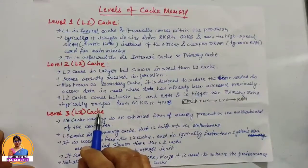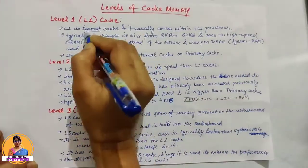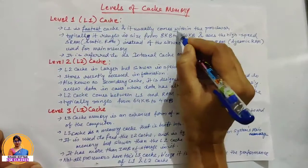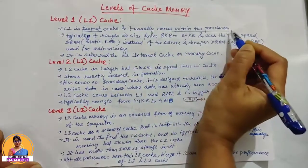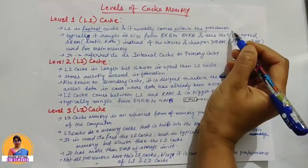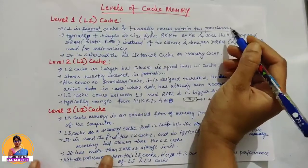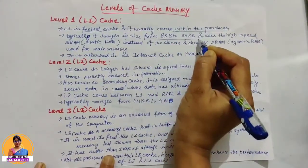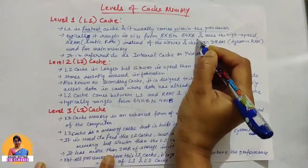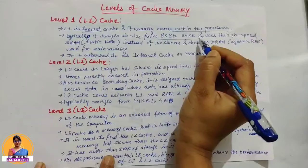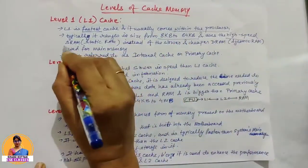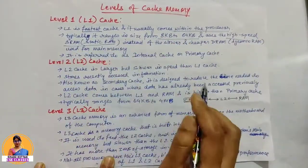Among these three, the fastest is L1 cache, because it is within the processor — it is attached directly to it. That is why it is the fastest. Typically, its size is between 8KB and 64KB, and it is very high-speed memory because it is made up of static RAM (SRAM).